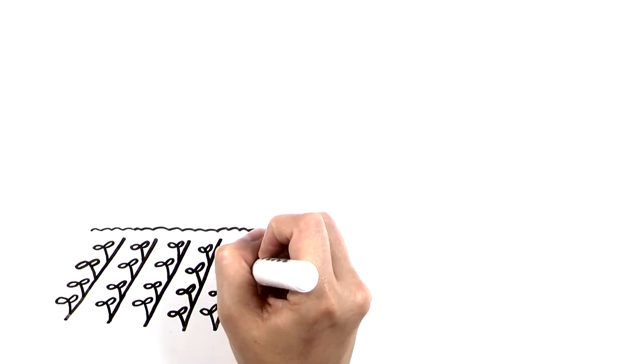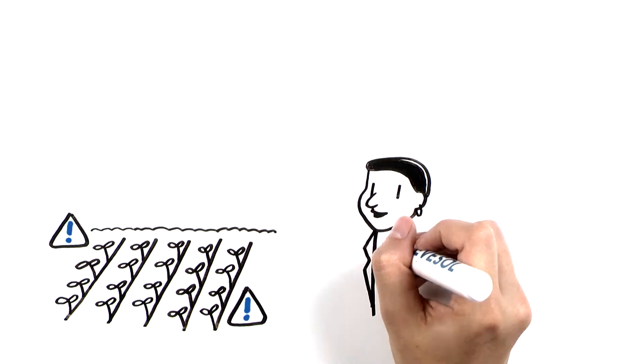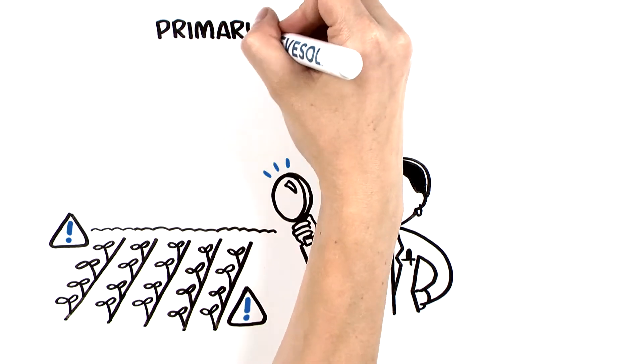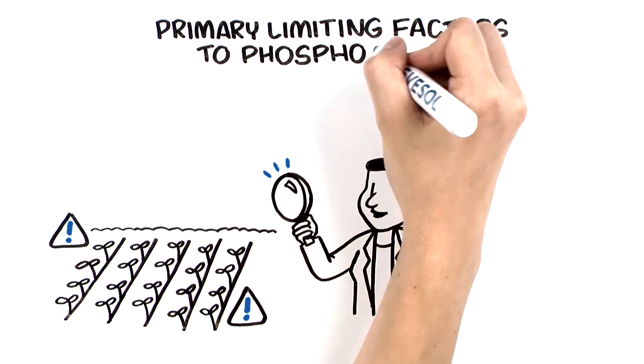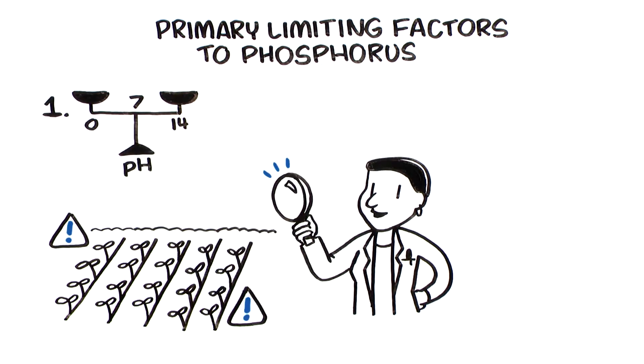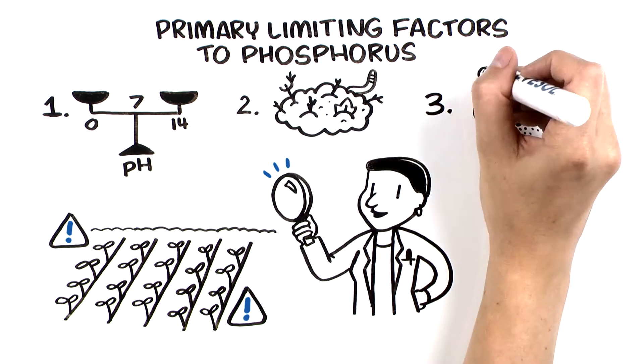Every field has nutrient availability issues. Research is ongoing, but experts agree that the primary limiting factors to phosphorus availability include pH, organic matter, and soil texture.